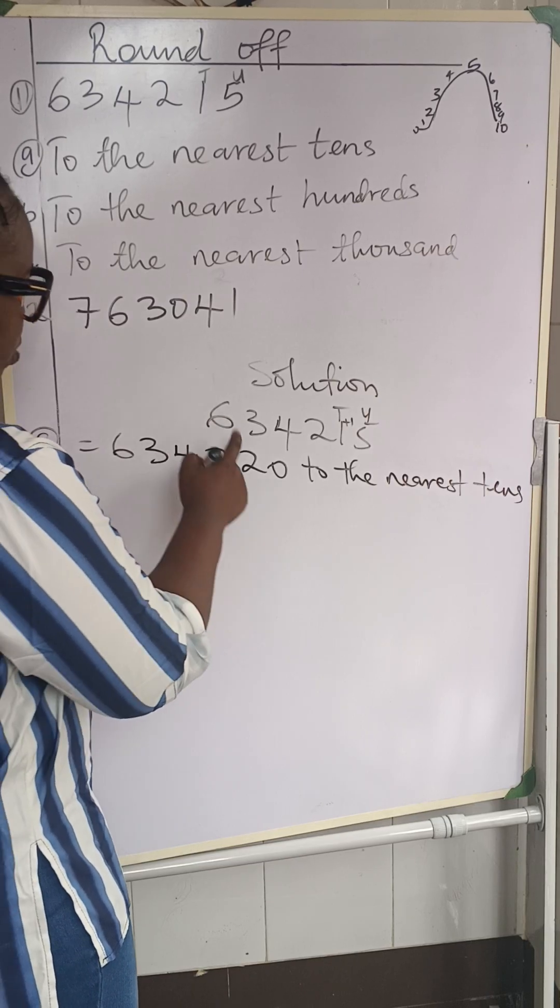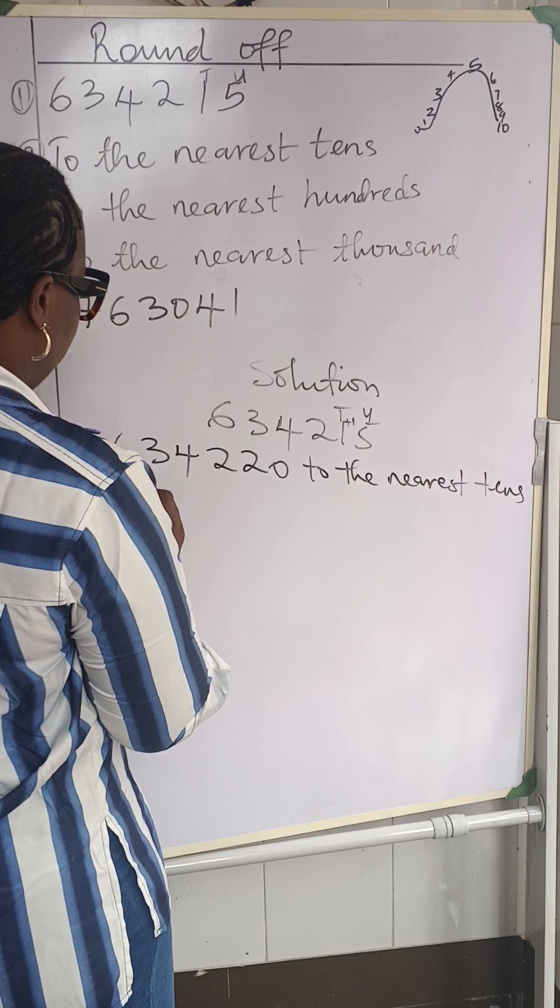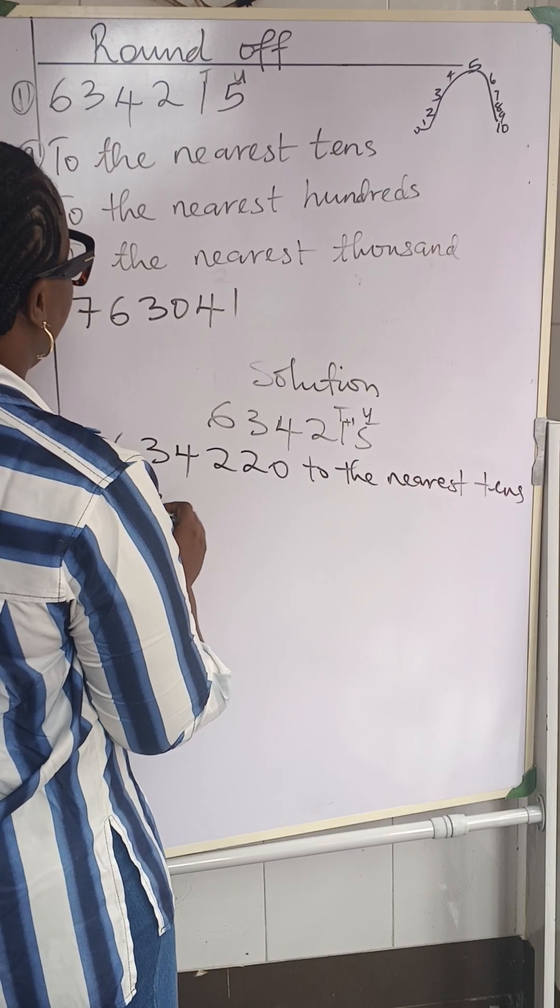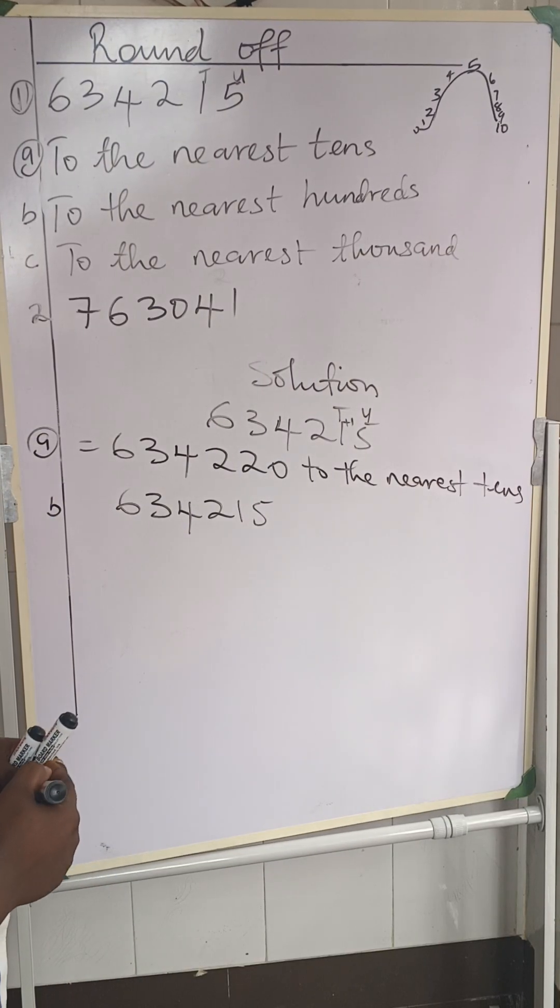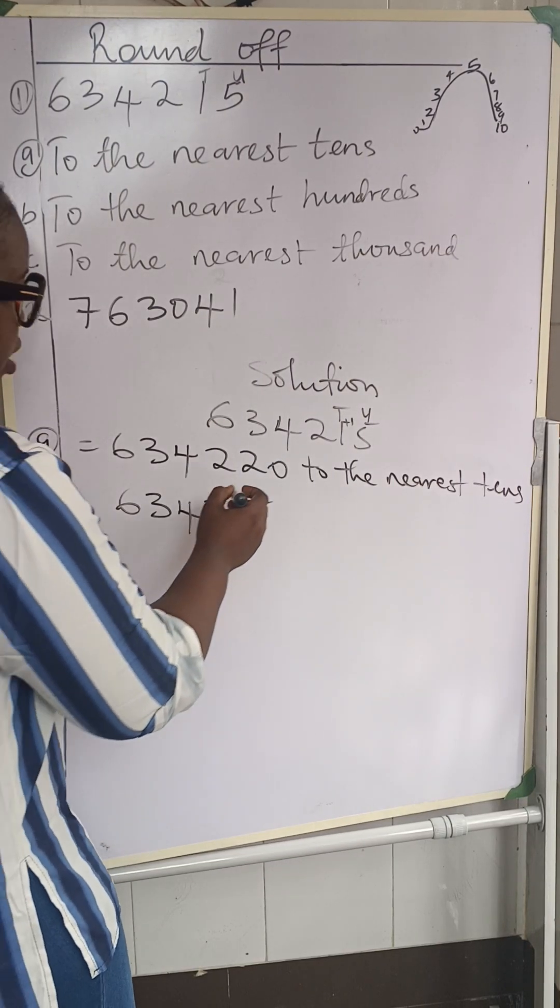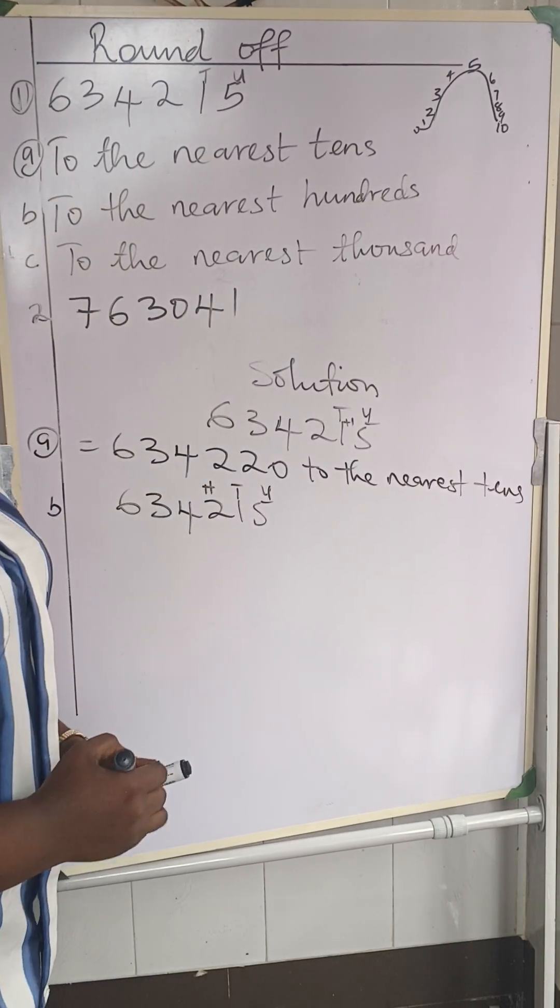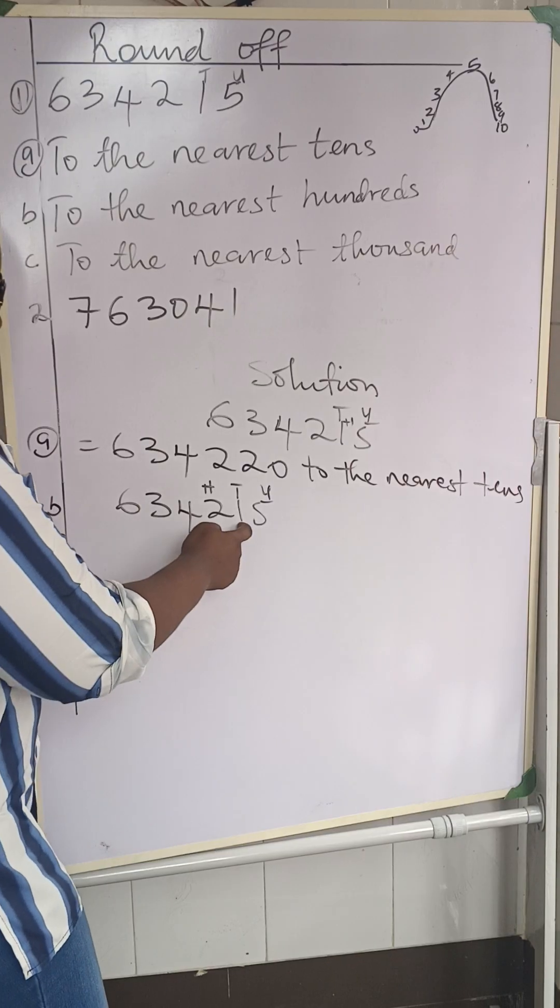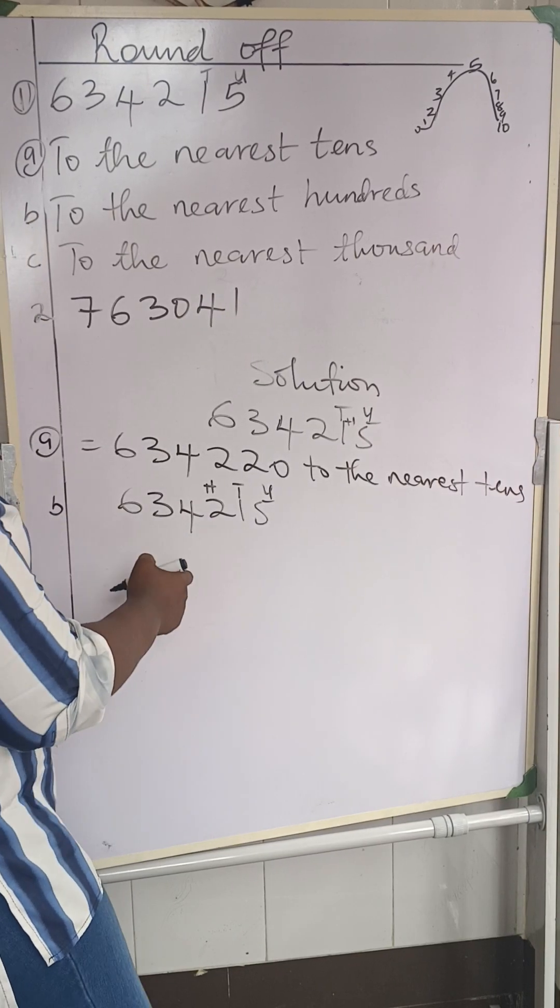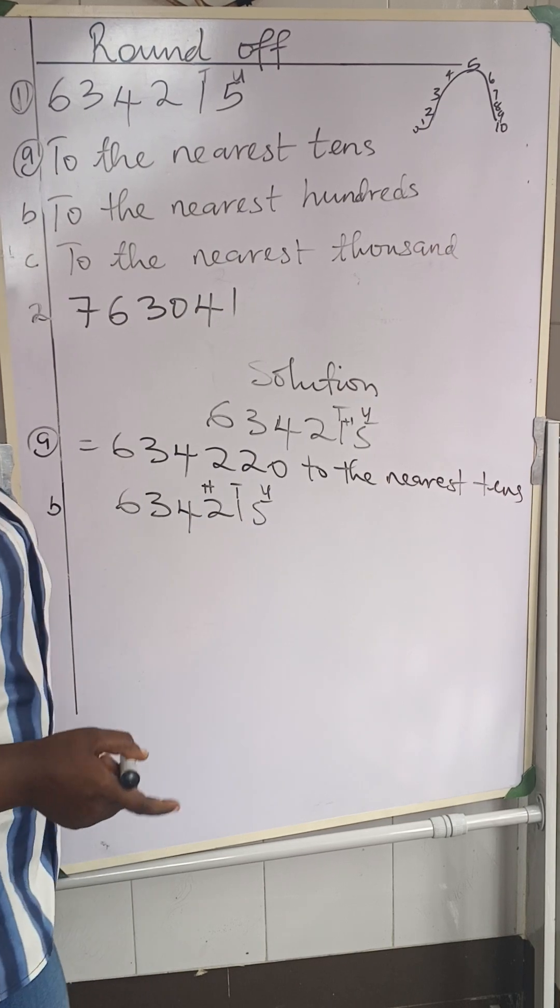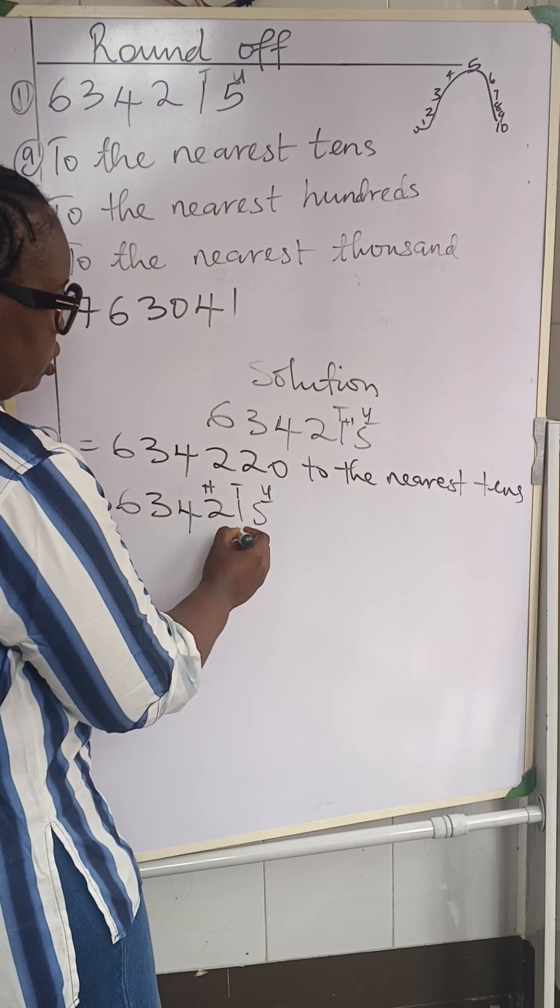Then B is going to be, we still bring down the initial number, which is 634,215 here. And we are doing it to the nearest hundred. When we label it, we'll have unit here, tens and hundred. You are saying that 100 is 2, and the closest neighbor from the right is 1, tens, which is 1, right? So you ask yourself, is this 1 up to 5 or less than 5?